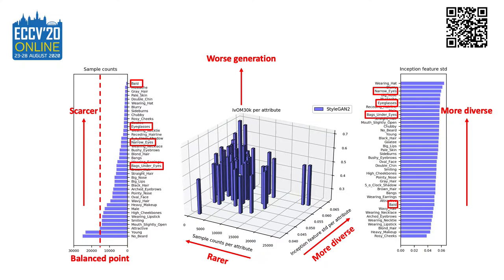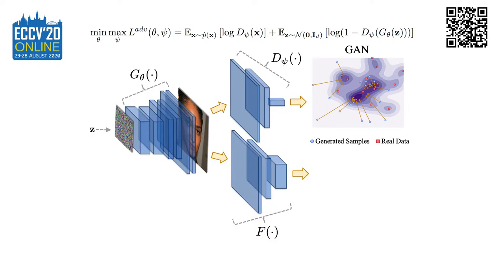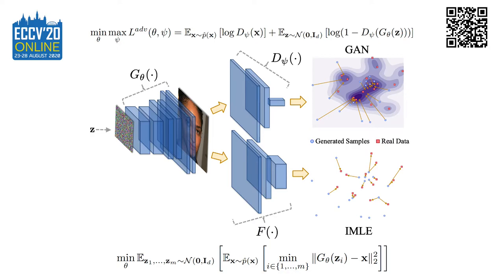Biased data leads to biased models. Our method harmonizes adversarial and reconstructive generative models, combining the benefits of both. Adversarial models generate realistic results, while reconstructive models guarantee data coverage.